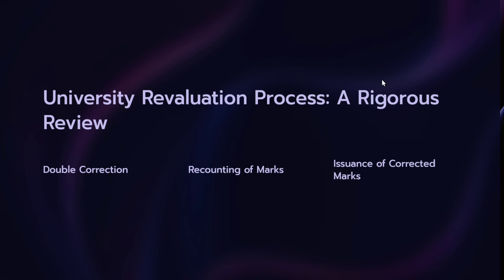Now, the university revaluation process — this is a rigorous review. Three major points are: double correction, recounting of marks, and issuance of corrected marks. How this correction will be made and how you will get marks is a very important question. Listen carefully.